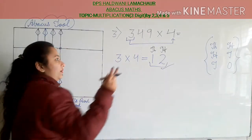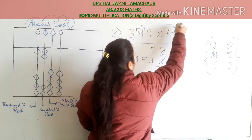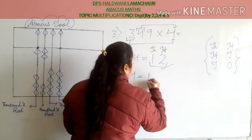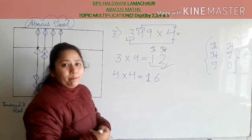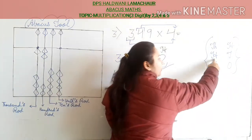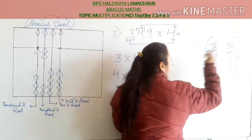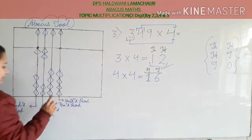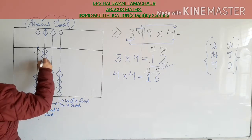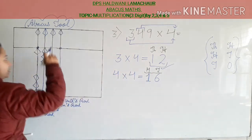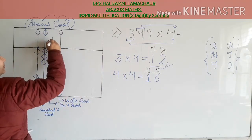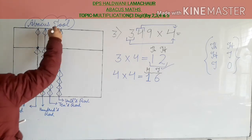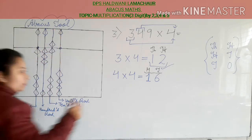Now multiply the second digit with 4: 4 into 4 is 16. According to the pattern, the first digit goes in hundreds rod and the second digit goes in tens rod. Add 1 in hundreds rod — put 1 bead up. And 6 in tens rod — for 6, take the help of 5: put 5-bead down and add 1 more. This is completed.